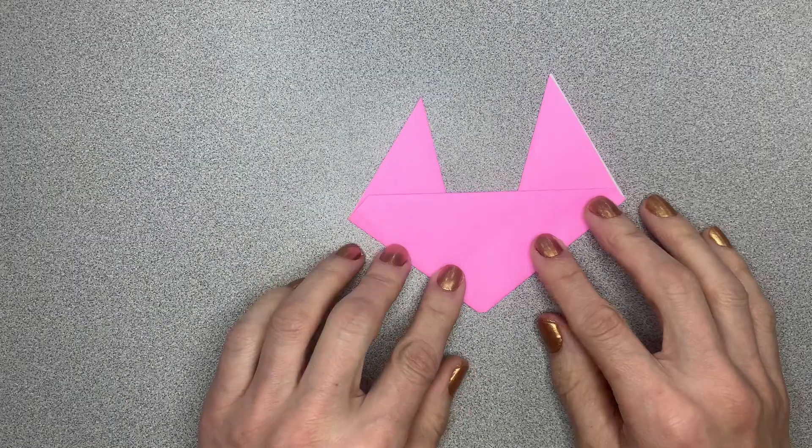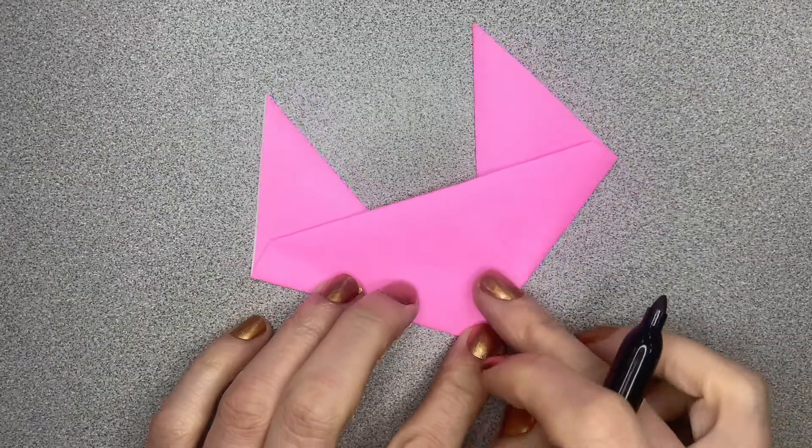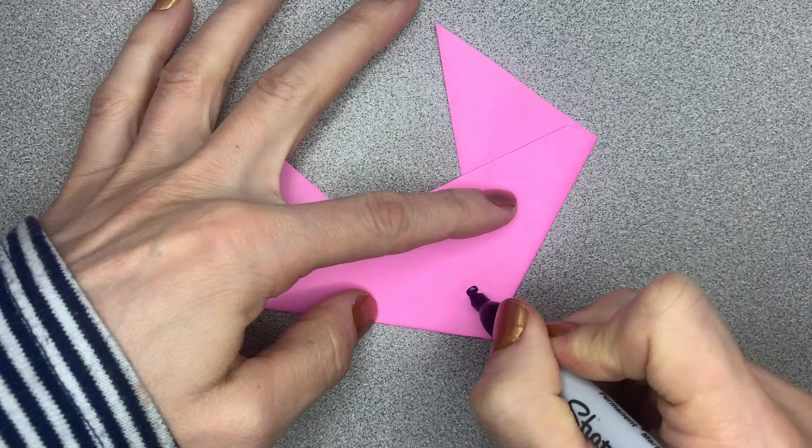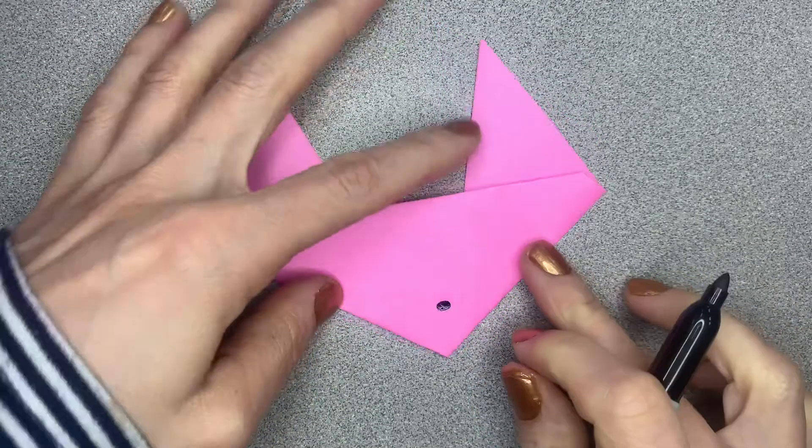And there's my little foxy. Okay, for my fox, I'm going to make a little round nose. I'm going to go up from the point a little bit.